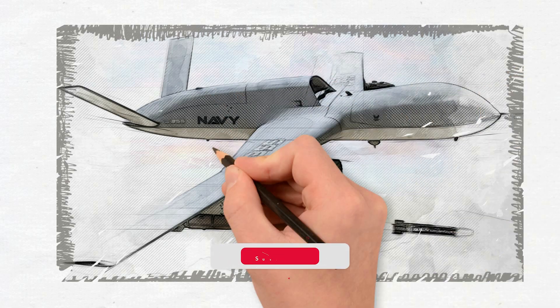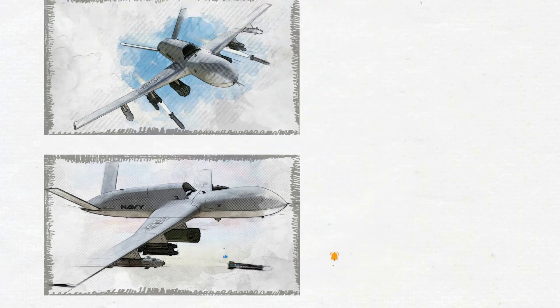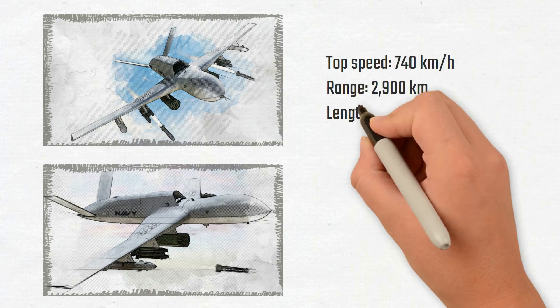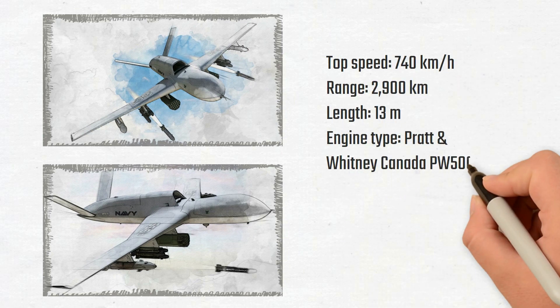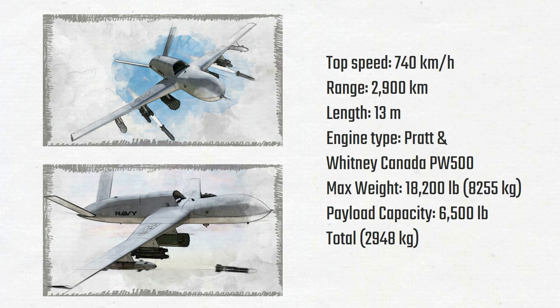The Avenger boasts stealth features like internal weapon storage and an S-shaped exhaust for decreased infrared and radar signatures. It is propelled by a turbofan engine. It can lift about three tons of ammunition. It can aim fire at the enemy using the electro-optical targeting system of the F-35 Lightning.